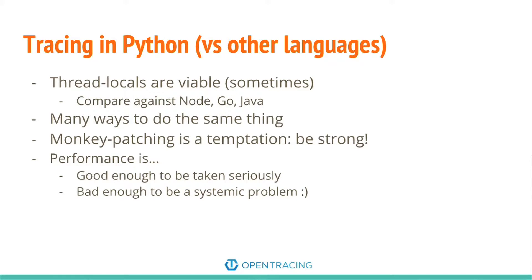Python versus other languages is kind of an interesting one. I've been doing this in about six languages and it's been interesting to see how different the task of instrumenting actually is. One thing that really stands out is that thread locals are viable in Python. Thread locals are available in many languages, but they're not viable for this sort of work in most systems. In Java and especially Node, there's so much asynchrony that thread locals don't really mean very much. In Python, it's more common, and Flask has really bet hard on that — there's a lot of context information passed through thread locals in Flask. So you can rely on that in Python, which makes instrumentation a lot easier.